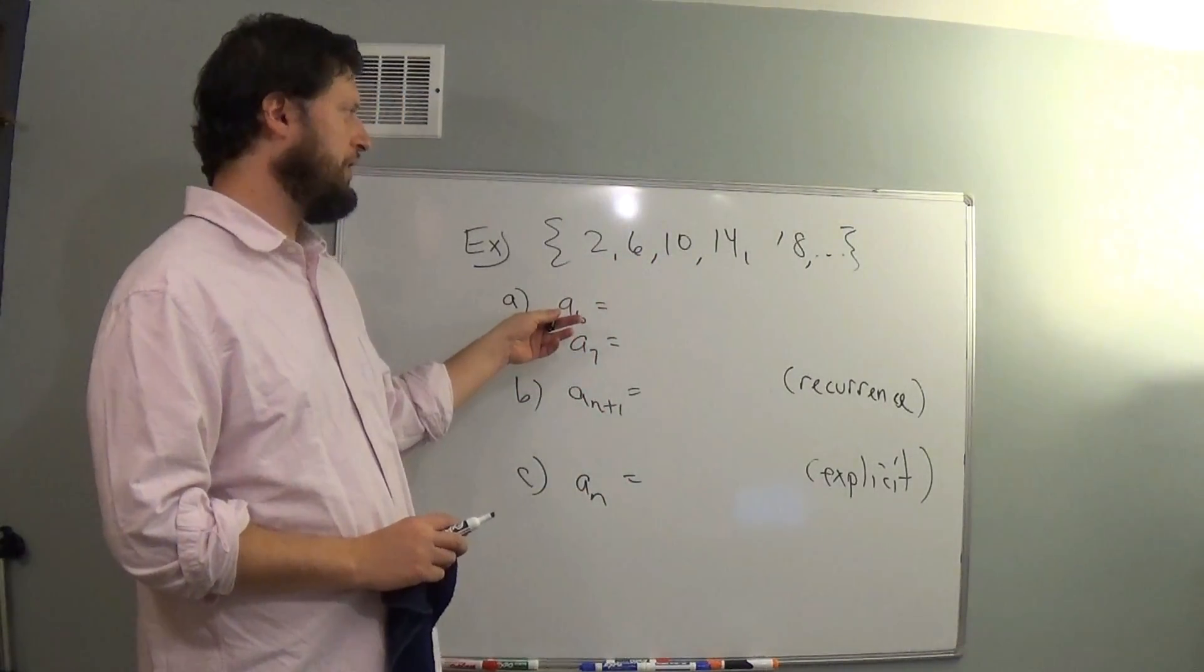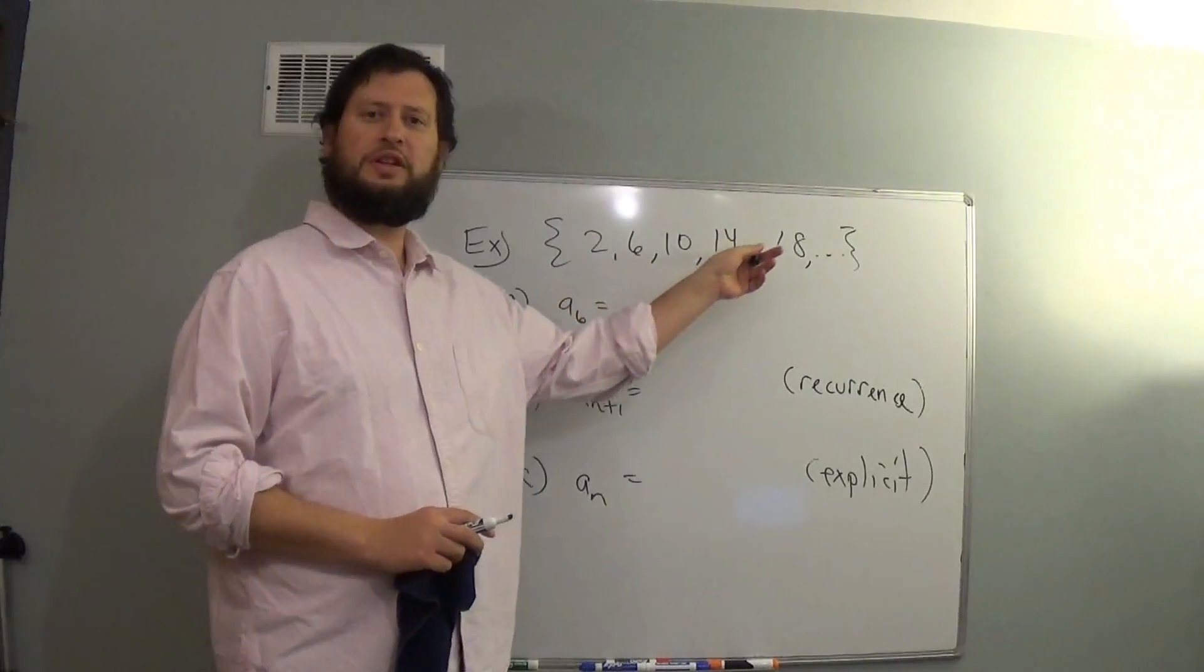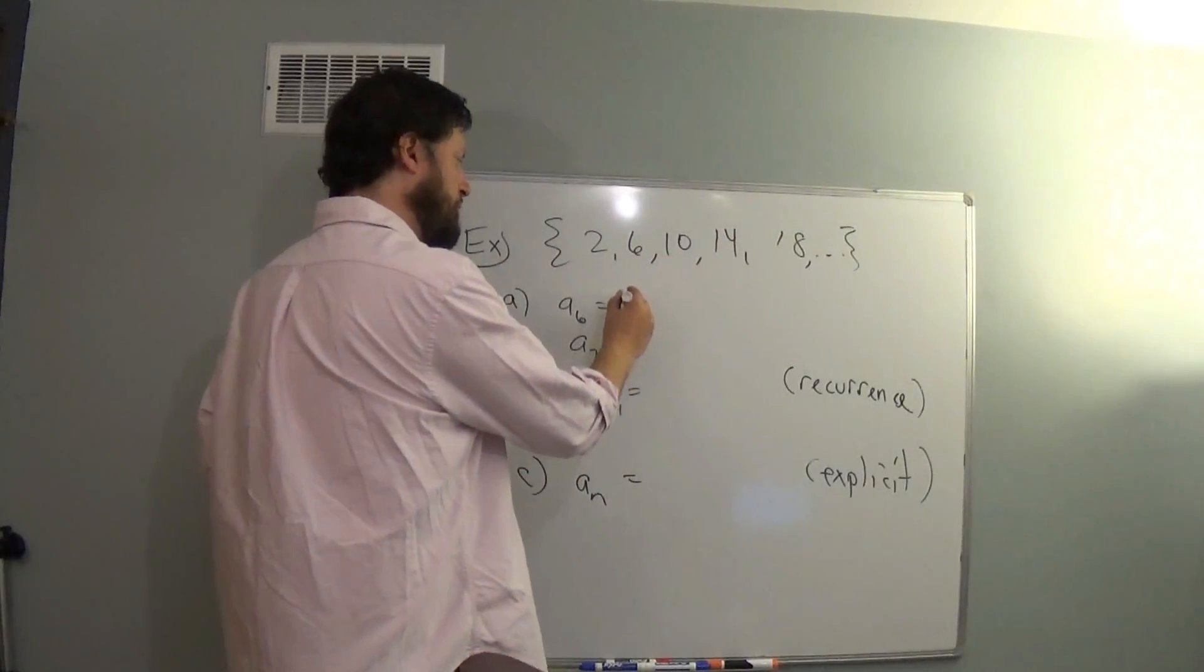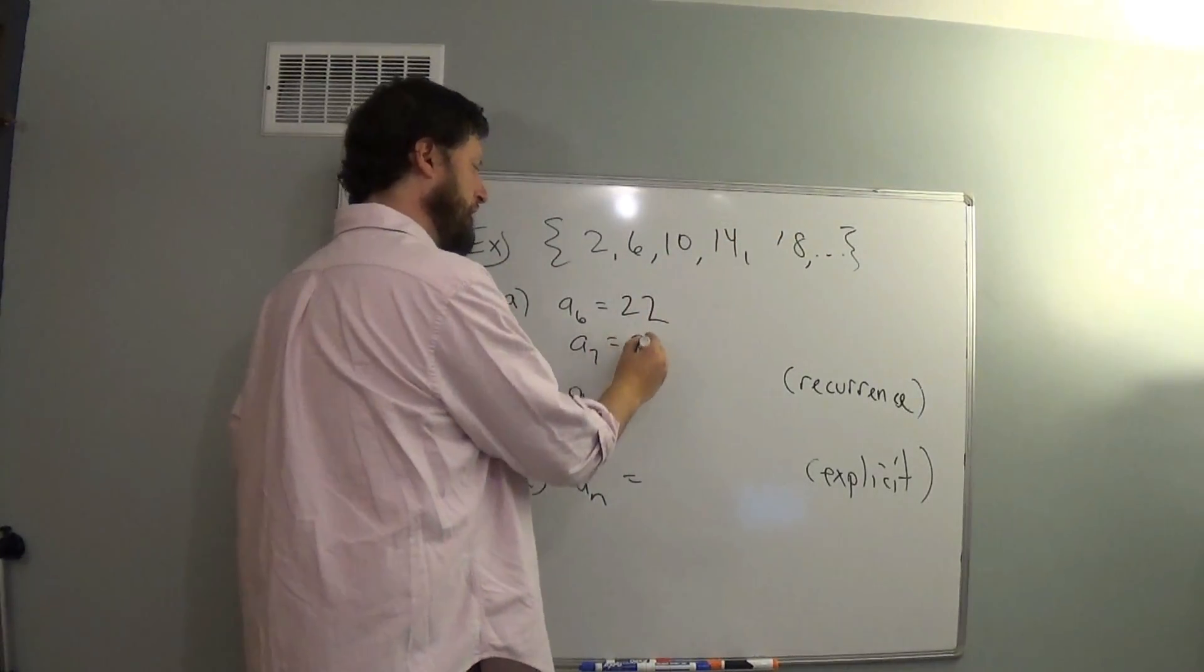The next term, a₆, well the pattern says add 4 each time. So the next one should be 22, and the one after that should be 26.